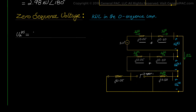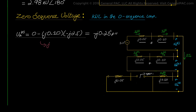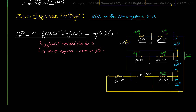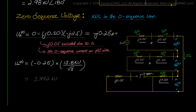For the zero sequence voltage, we apply the same approach: zero sequence voltage equals 0 minus J0.10 times negative J2.5, giving negative 0.25 per unit. Here, the impedance is J0.10 only because the transformer per unit impedance is excluded from the loop due to the open delta — the generator impedance of J0.05 is excluded, and zero sequence current will not flow through the high voltage side. There is also no voltage source for zero sequence. Multiplying by the base gives 1.992 kV at 180 degrees.